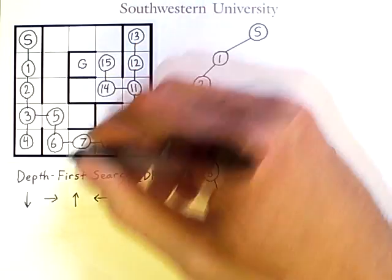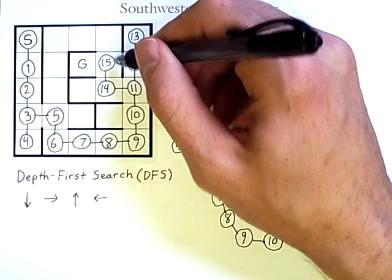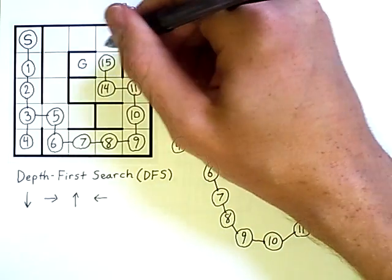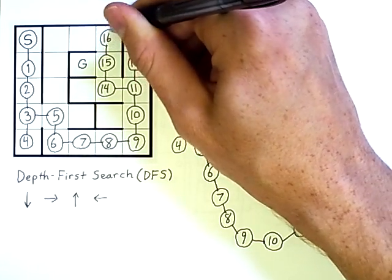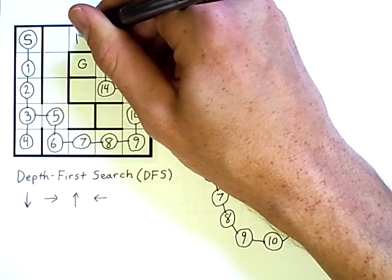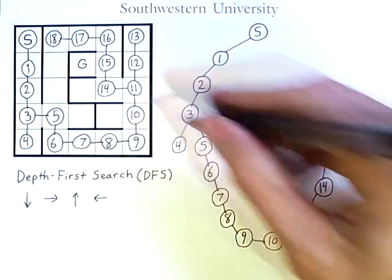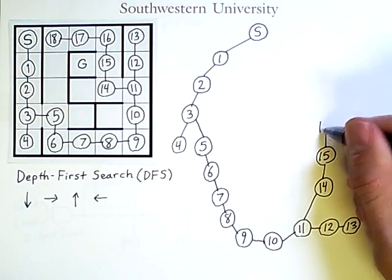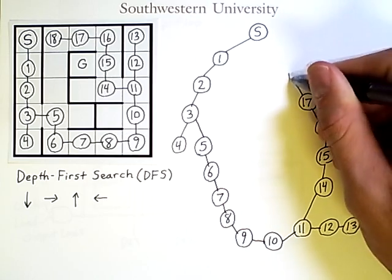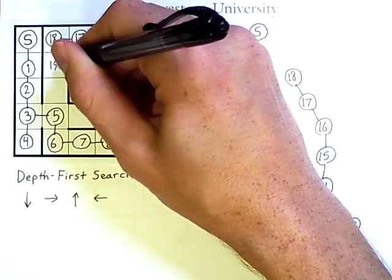Now we have another problem. The order here is down, right, up — and we're right next to the goal, but the computer doesn't know that. It just knows its current state is not the goal. Down has been visited, right is a wall, and up is available, so it tries that — reaching node 16. From there we go through down, right, up, and then left, visiting all of those positions: nodes 17, 18, and then from 18, going down works — the 19th node we visit — and then the 20th node.